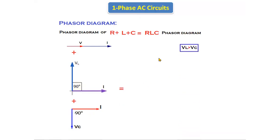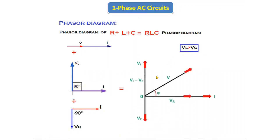There are two conditions. In the first case, voltage across the inductor VL is greater than voltage across the capacitor VC. The horizontal line indicates the resistor phasor, the vertical line upward is the inductor phasor, and the vertical line downward is the capacitor phasor. Since VL is greater than VC, we take VC upwards and get VL minus VC.